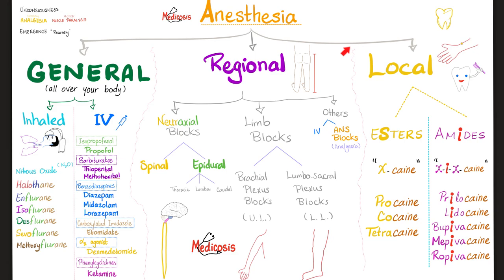Anesthesia is general, regional, or local. Regional is divided into neuraxial, limb, and others. Neuraxial is in the midline. Oh, you're talking about spinal cord here. Absolutely. It could be spinal or epidural. Has to be in the midline. However, if you go to the extremities, that's the limb block. That's today's topic. Neuraxial was the previous video's topic.